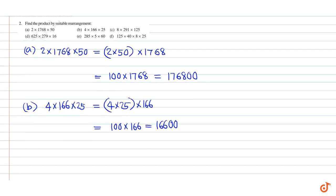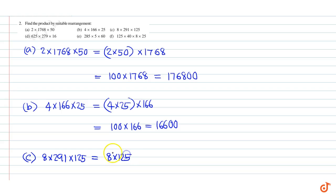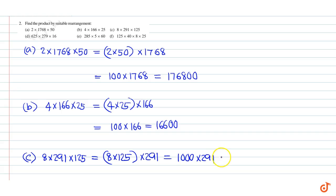Part c: 8 into 291 into 125. This is equal to 8 into 125 into 291, which is equal to 1,000 into 291, which is equal to 2,91,000.